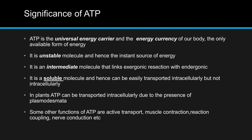ATP is the most important molecule in our body as it is the only available form of energy, also known as the energy currency of our body. As discussed earlier, it is an unstable molecule and hence the instant source of energy. It is a small and soluble molecule and so can easily act as an intermediate for endergonic and exergonic reactions, as it is easily transported intracellularly, meaning within the cell.